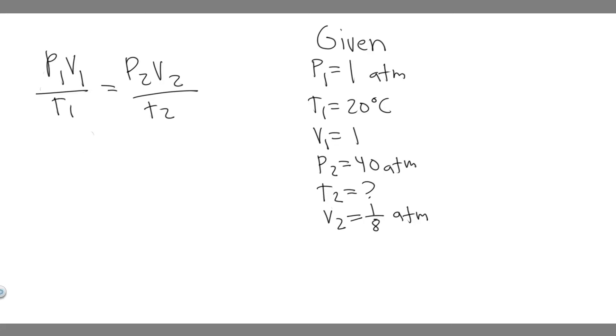In this problem, we're told in an internal combustion engine, air at atmospheric pressure and a temperature of about 20 degrees Celsius is compressed in a cylinder by a piston to one-eighth of its original volume, compression ratio equals 8. Estimate the temperature of the compressed air, assuming the pressure reaches 40 atm.